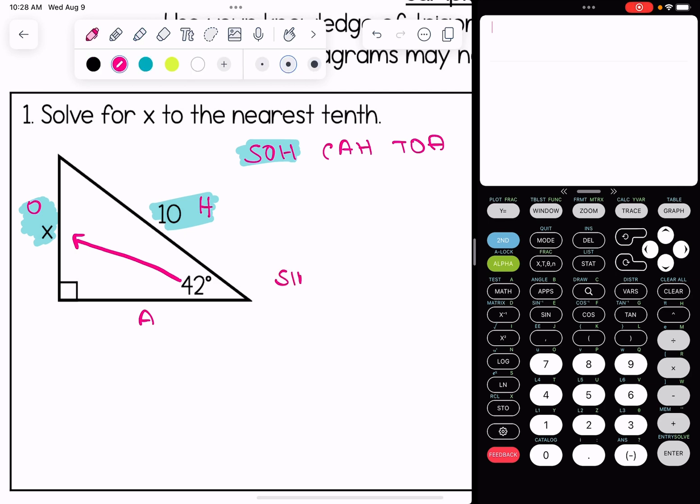We're going to set it up as sine of 42 equals the opposite over the hypotenuse, which is 10. I'm going to put sine of 42 over one and cross multiply.